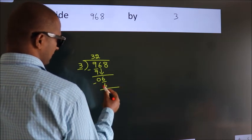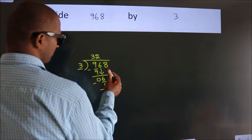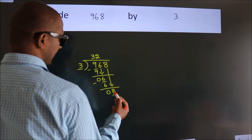Now we subtract. We get 0. After this, bring down the beside number. So, 8 down.